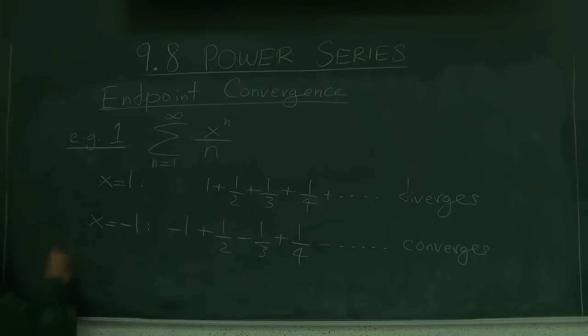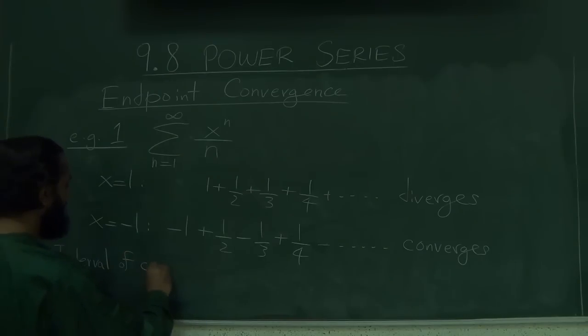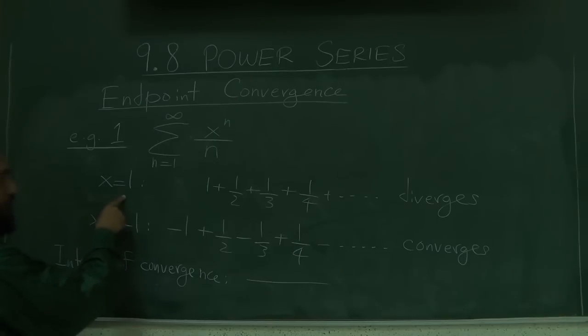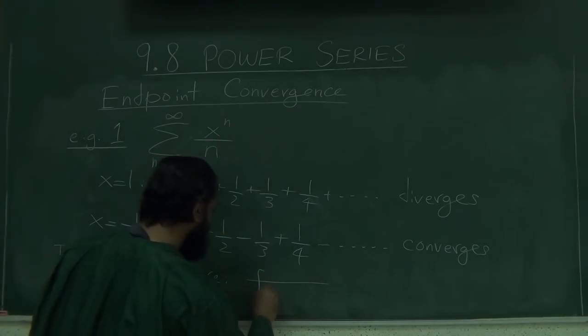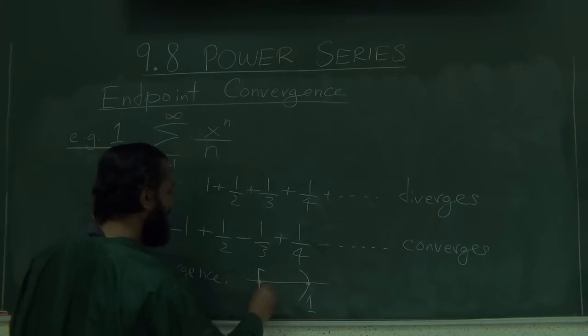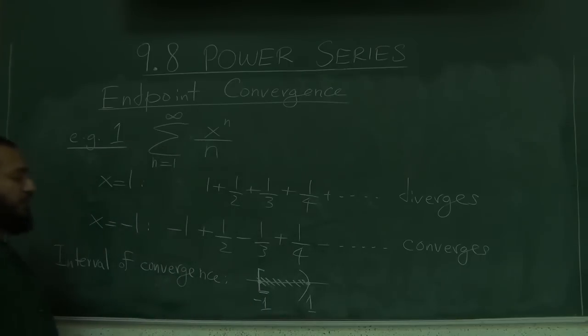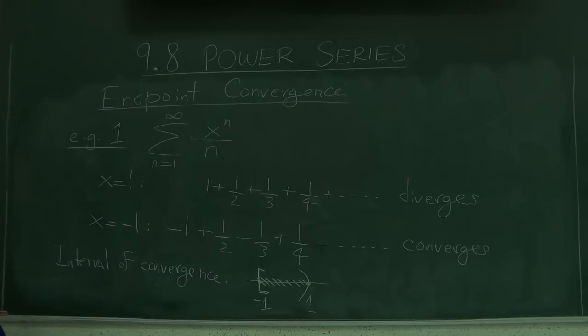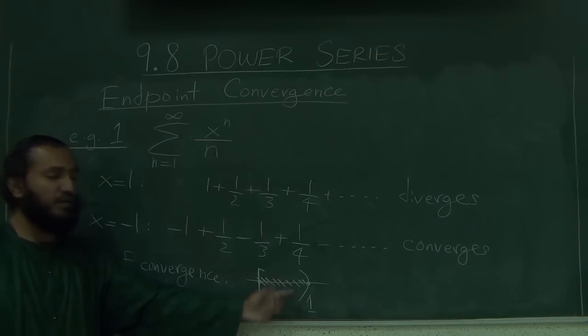Okay, so finally, the interval of convergence, which means the full set where it converges, not just figuring out the radius, but the full set. Interval of convergence is the interval [-1, 1), minus 1 is included, positive 1 is not. This is your interval of convergence. Notice again that this is a series centered at 0 and 0 is the center of this interval.